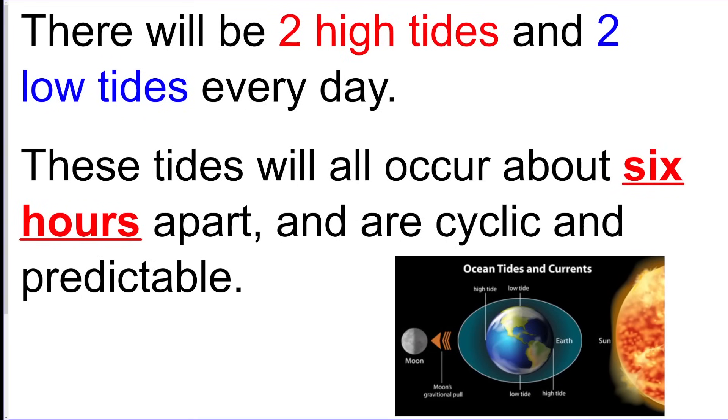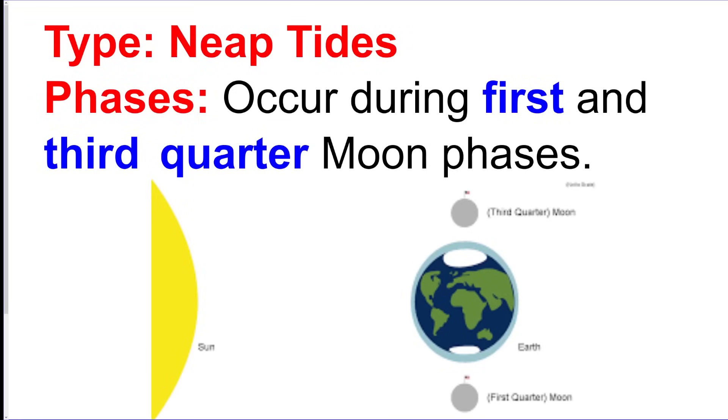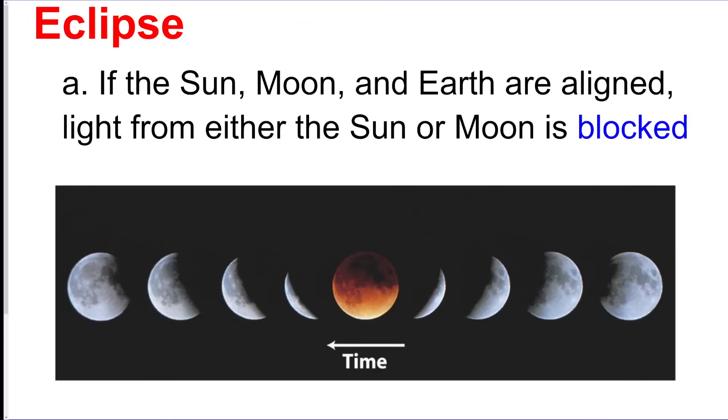Tides. So there's going to be two high tides and two low tides per day. They're based off of gravitational pull. They're about six hours and 13 minutes apart, and they're cyclic and predictable. If you have the Sun, Moon, and the Earth lined up, that's going to give you spring tides, which is a higher high tide and a lower low tide. You got neap tides, which is going to be first quarter and third quarter right here. This is going to give you low high tides and high low tides.